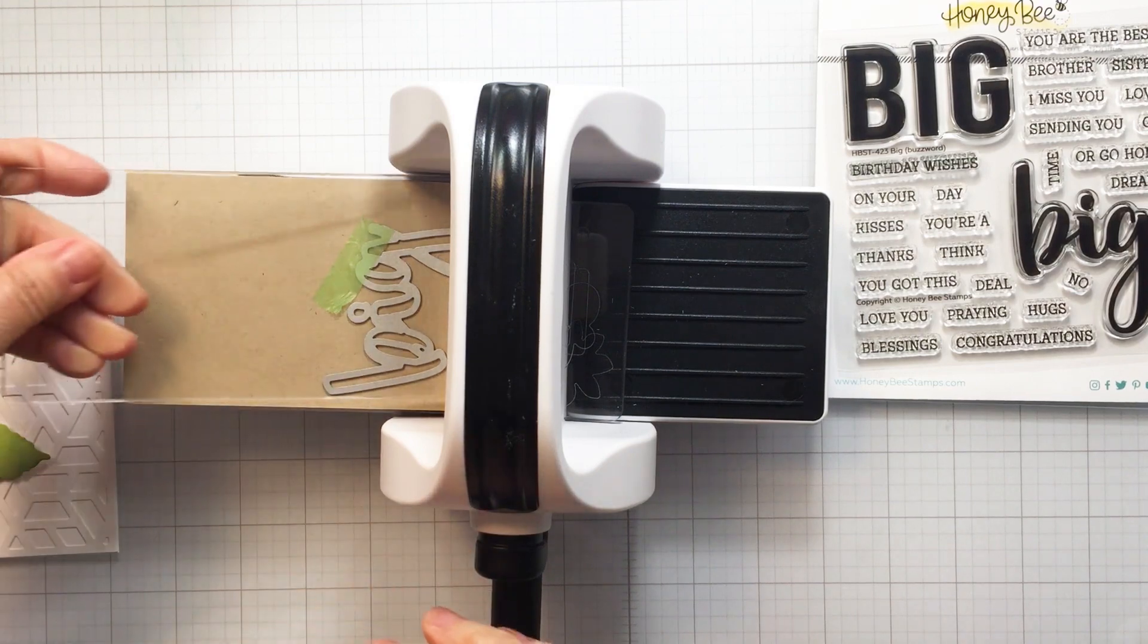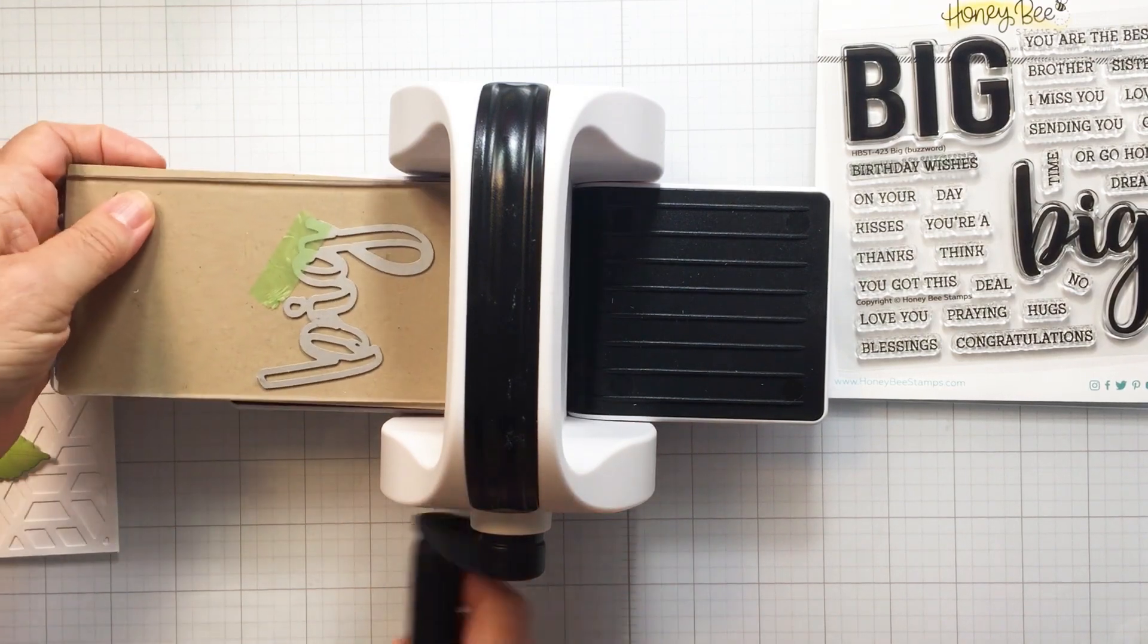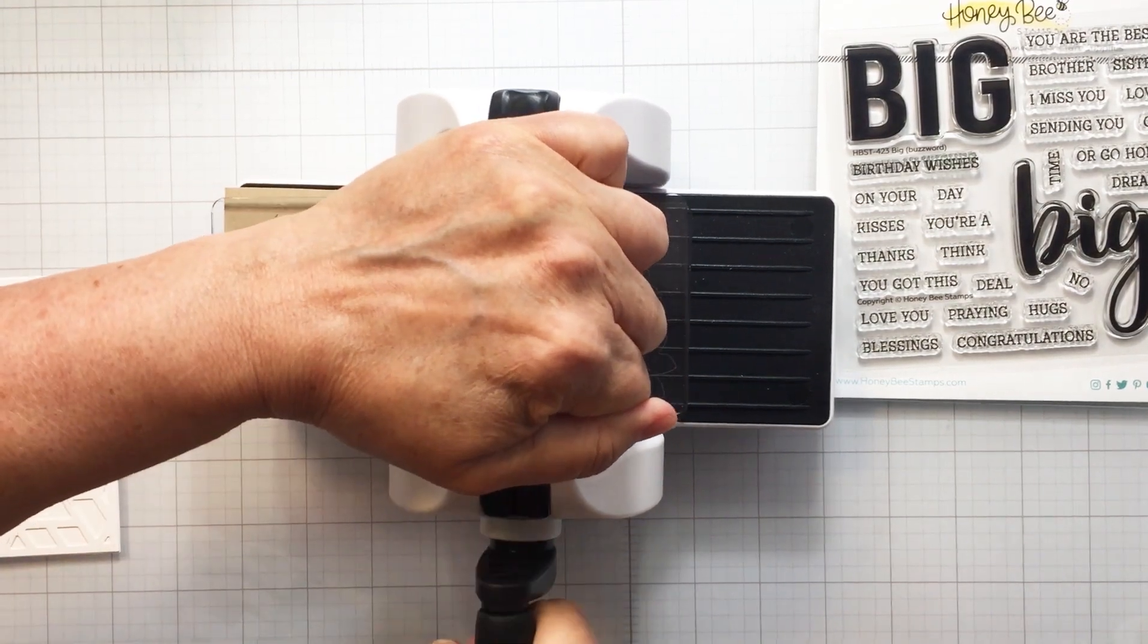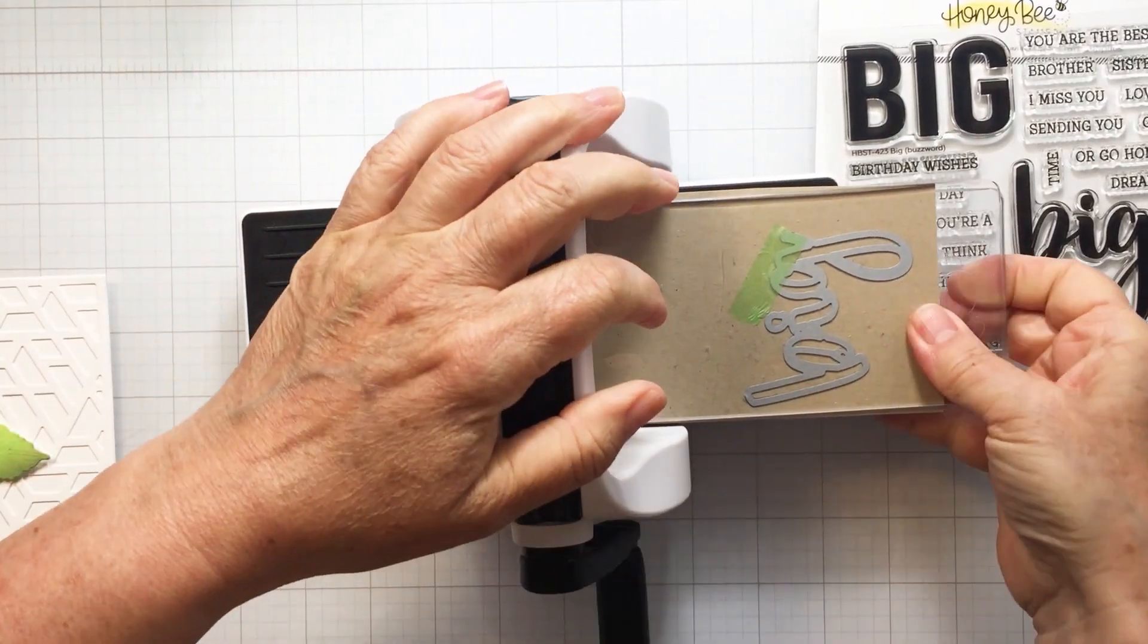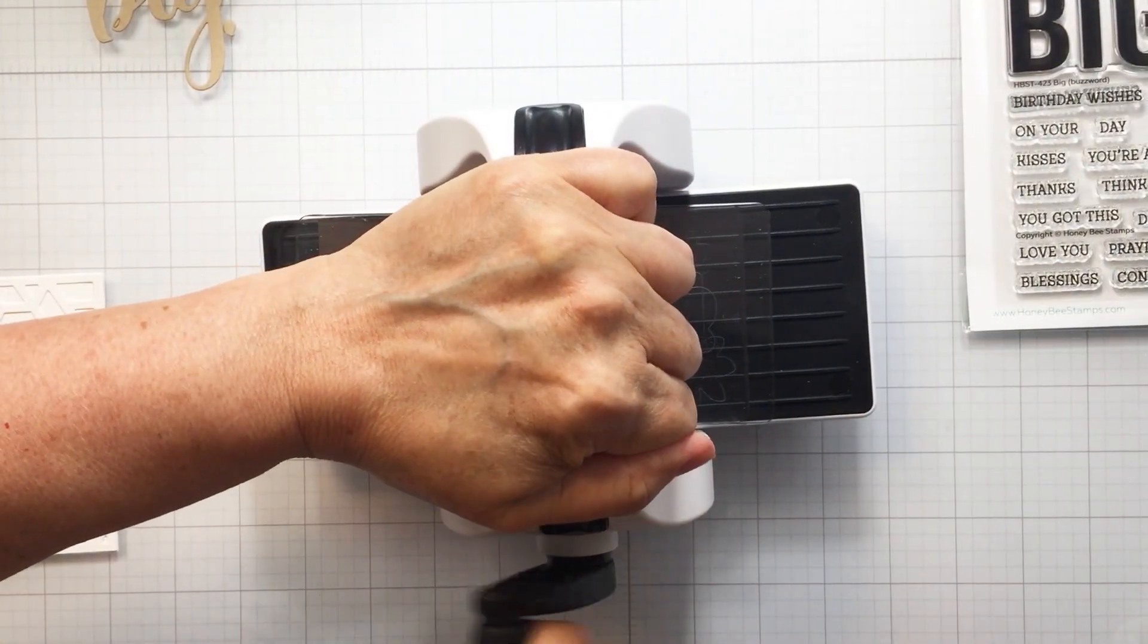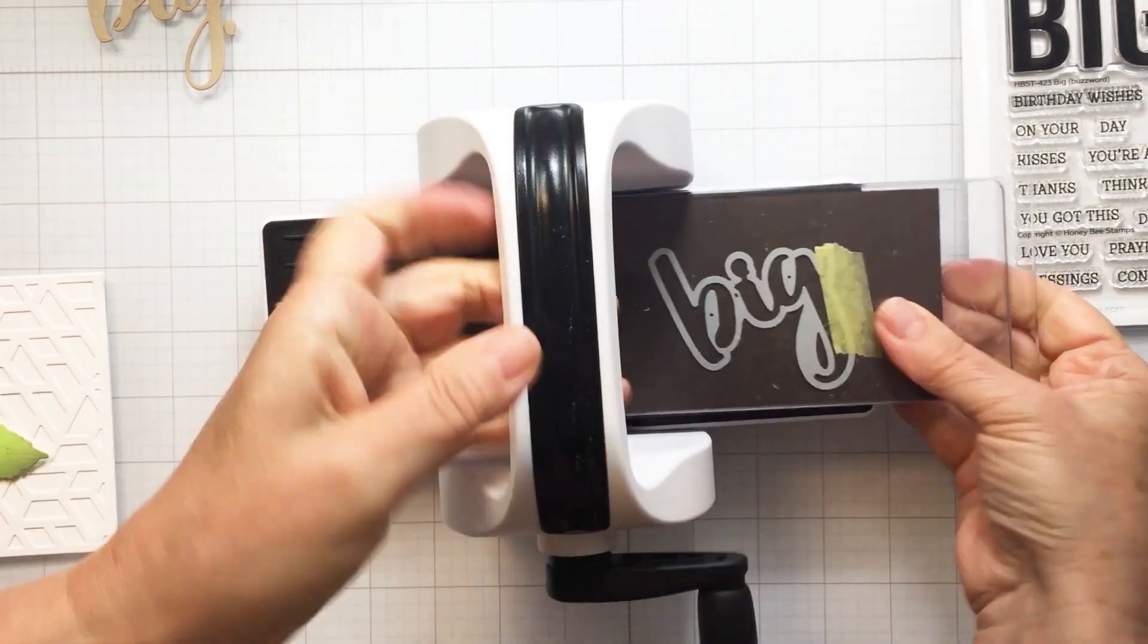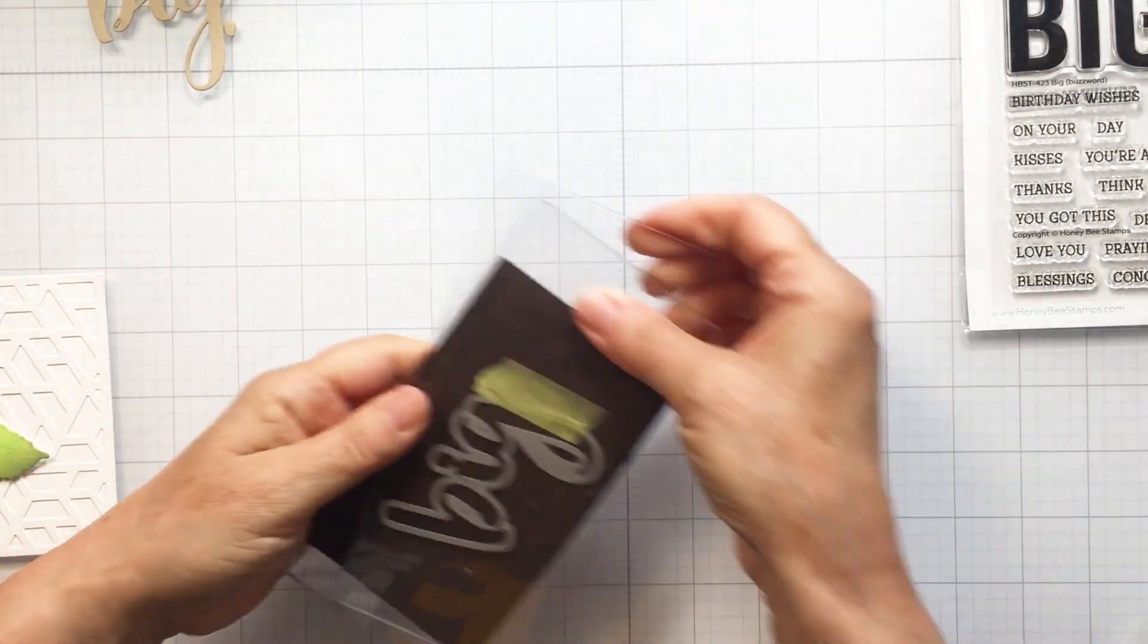Now I did want to cut the three different layers of the scripty word 'big' with the dies. I thought I was going to use the first layer, the top layer, out of craft. I actually end up changing my mind.